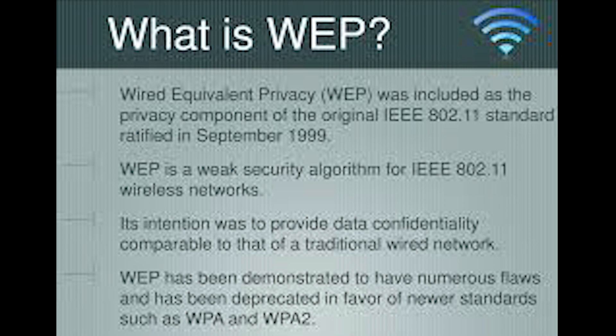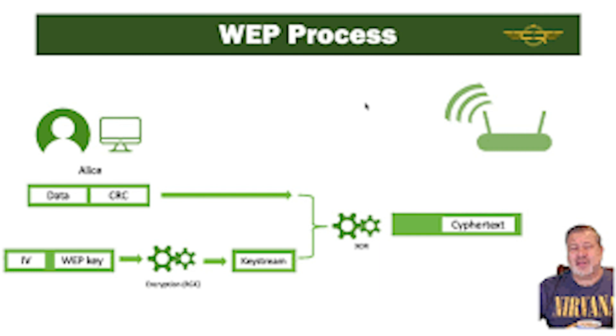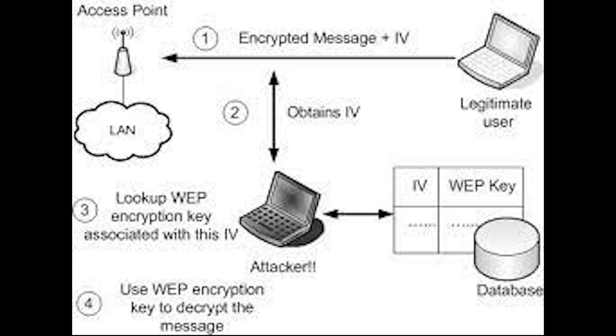WPA2 stands for Wi-Fi Protected Access Version 2. WEP, or Wired Equivalent Privacy, was first released as part of the IEEE 802.11 standard in 1999. WEP was supposed to offer the same security level as a wired network. However, there are many well-known security issues in WEP — it is easy to break and hard to configure. Despite all the work done to improve the WEP system, it remains a highly vulnerable solution and has since been replaced by WPA and WPA2.